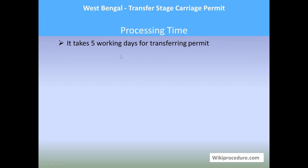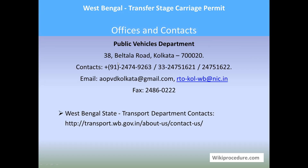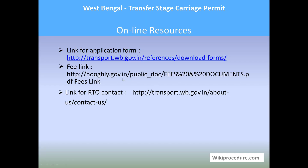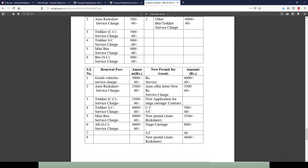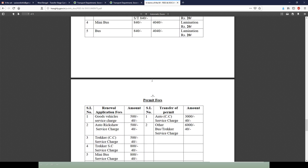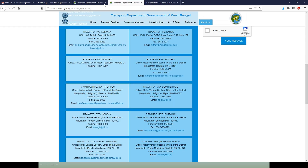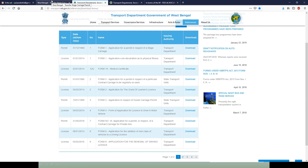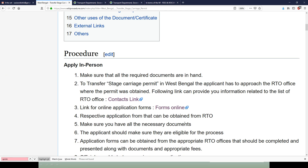Processing time: it takes five working days for transferring the permit. Offices and contacts: Public Vehicles Department, 38 Beltala Road, Kolkata 700020; email and fax details are provided. The contact link also provides details about RTO offices for the applicant. Online resources: all the links provided give direct access to the websites seen in this session, which have good information and details for completing this procedure, placed in appropriate places to save your valuable time.